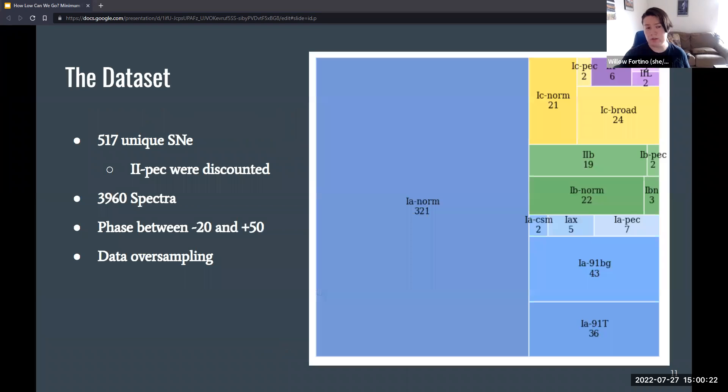Now let's take a look at the data set that DASH uses and that we used in our replication of the DASH results. There are 517 unique supernova, and unfortunately we had to discount two peculiar supernova. There were about 4,000 spectra in the data set, and this was amplified through their data oversampling to about 2 million individual spectra. Through their oversampling, they added copies of the spectra to the data set with injected noise and shifted redshift in order to artificially rebalance the data set. Now they're not adding in any new information to the model, so the bias towards 1A normals will always be present, but it lessens the problem. And finally, we only accept spectra whose phase is between minus 20 days and plus 50 days.